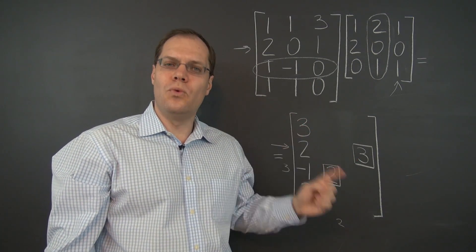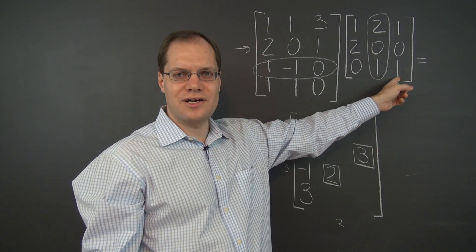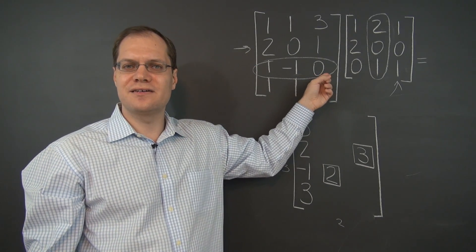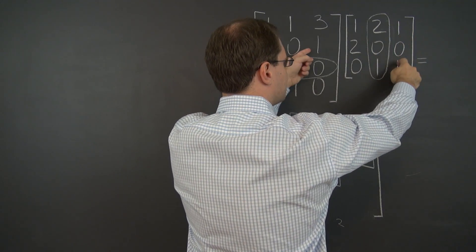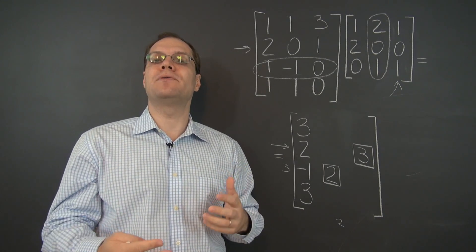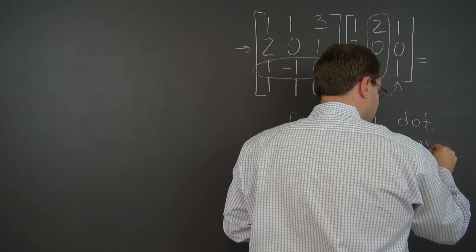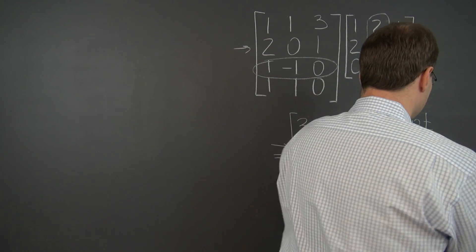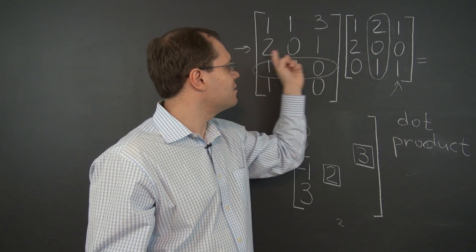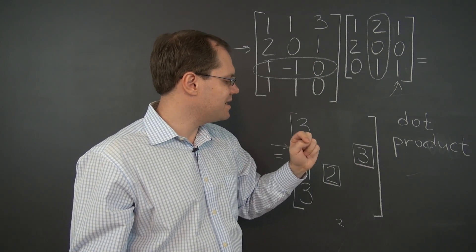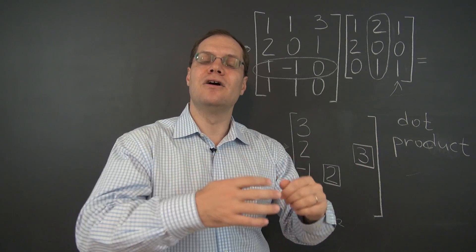That's how matrix multiplication works — it can be computed one entry at a time. To determine a particular entry, you have to look at the corresponding column in the matrix on the right and the corresponding row in the matrix on the left, and perform this peculiar operation where you multiply those entries one by one and add together the results. That operation has a name in linear algebra: it's called the dot product. You dot two vectors — you would say this entry is a dot product of this column and this row, finding the pairwise products of the entries and then adding them all together.